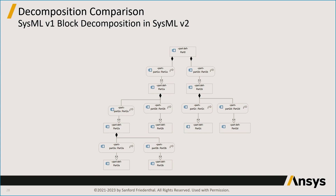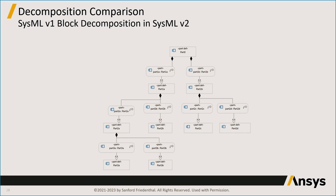Now let's look at decomposition in SysMLv2 and compare it to v1. In SysMLv1, a block decomposition typically has a block composed of parts typed by other blocks, which are in turn composed of parts typed by other blocks. You stair-step down the decomposition hierarchy from block to part to block to part. When you map that over into a SysMLv2 model, you get the same thing.